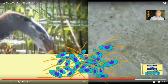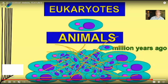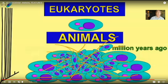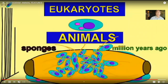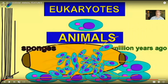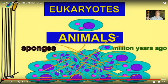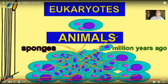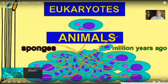It was from those eukaryotic protists that, give or take about 700 million years ago, the very first animals evolved — being multicellular, having collagen as the major extracellular protein, and having some genetic changes.